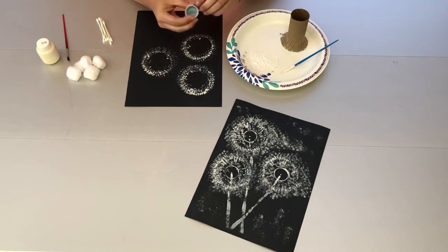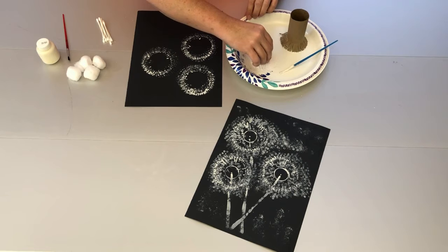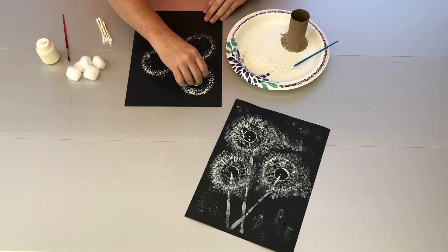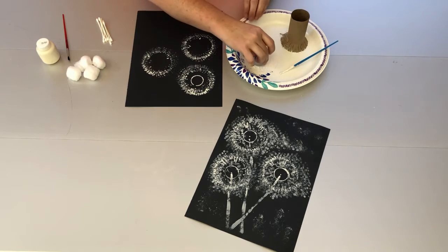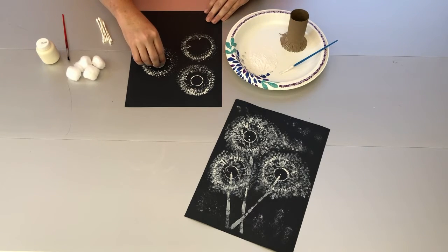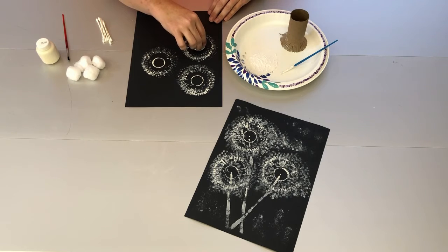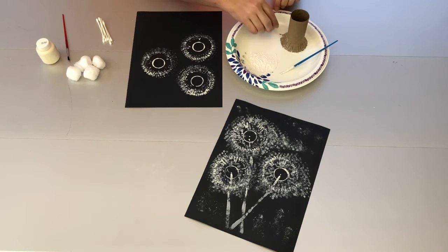The next step is to take a bottle cap and you're just gonna dip it in the paint a little bit. And we're gonna make the centers to our dandelions. On each one. Like that.